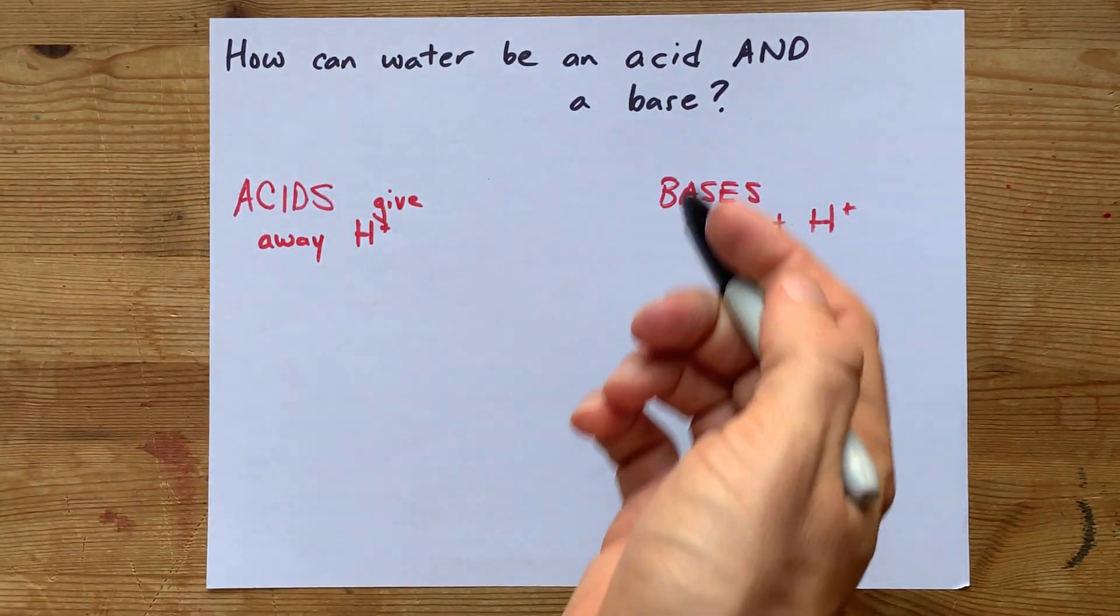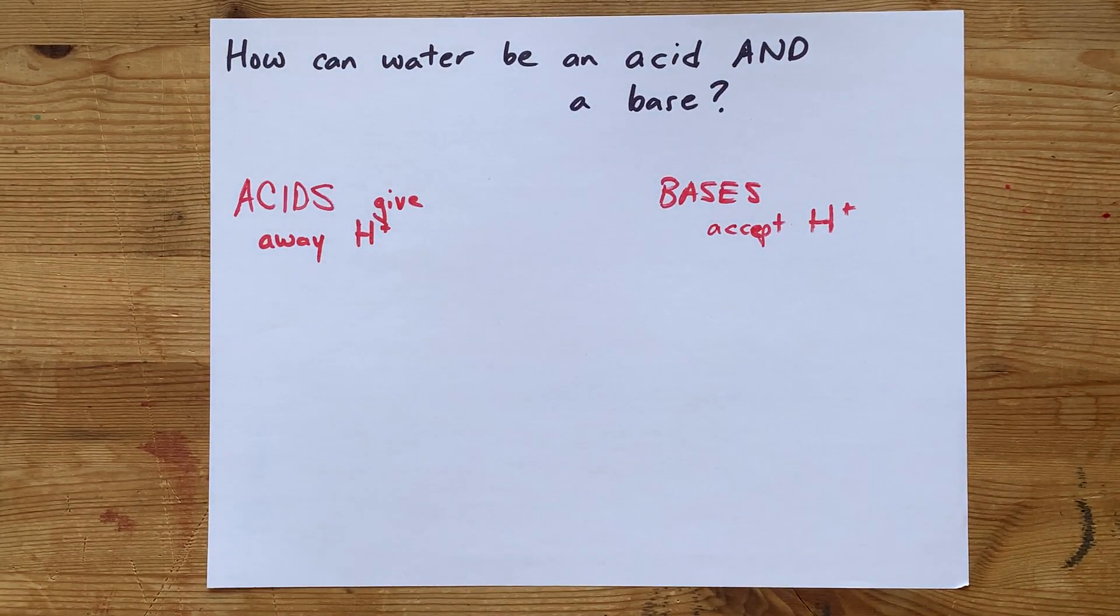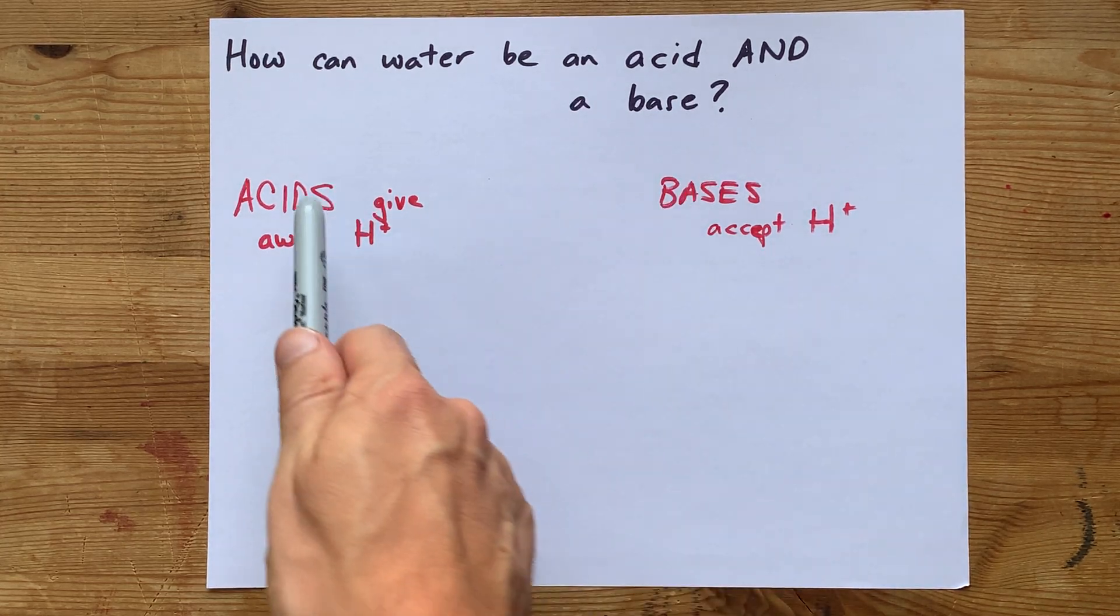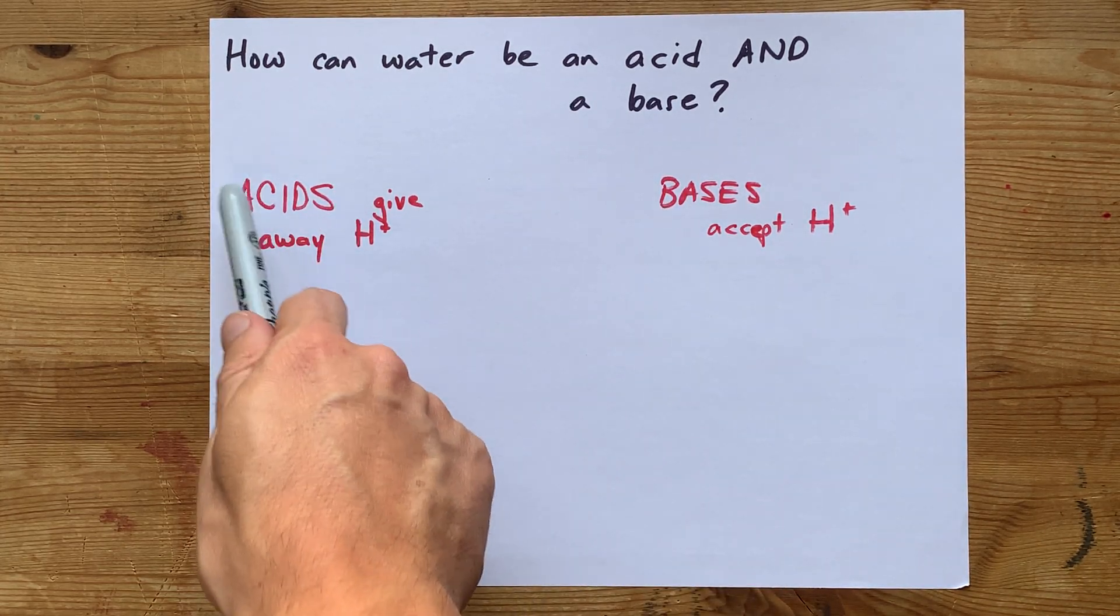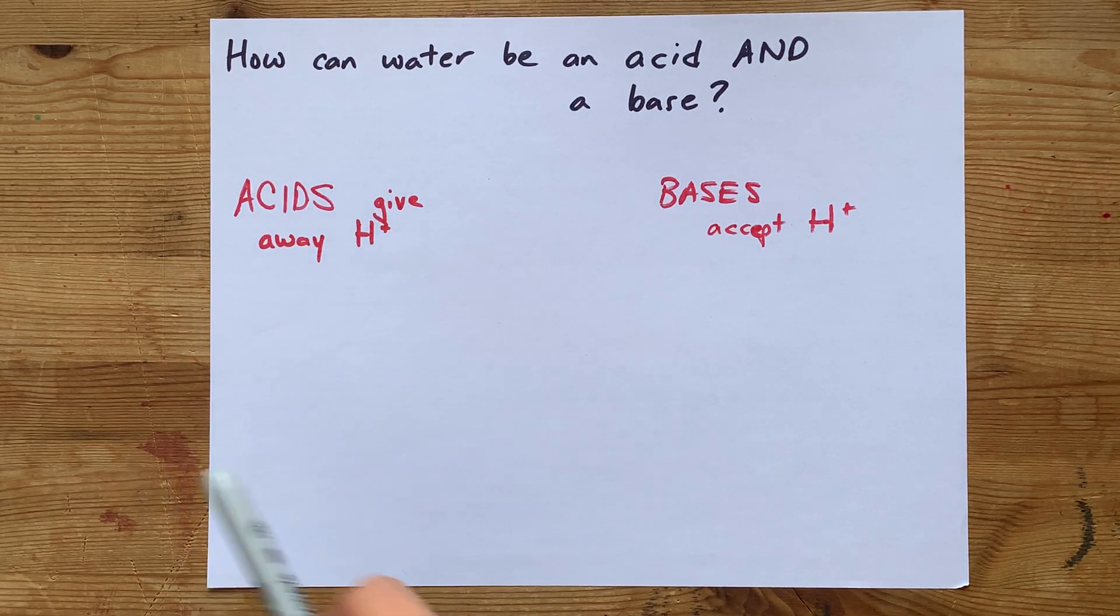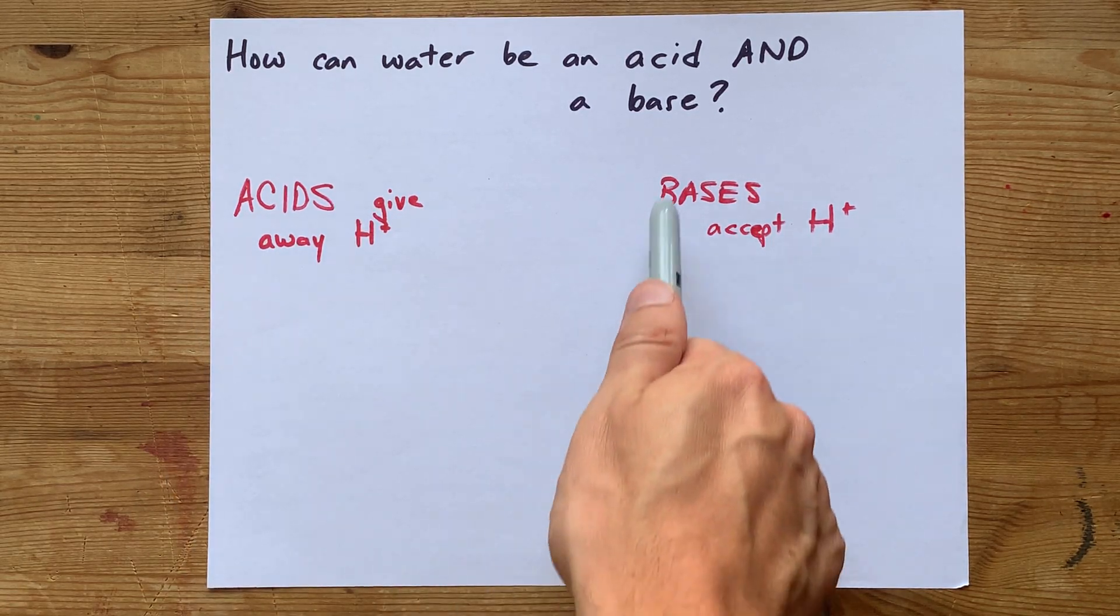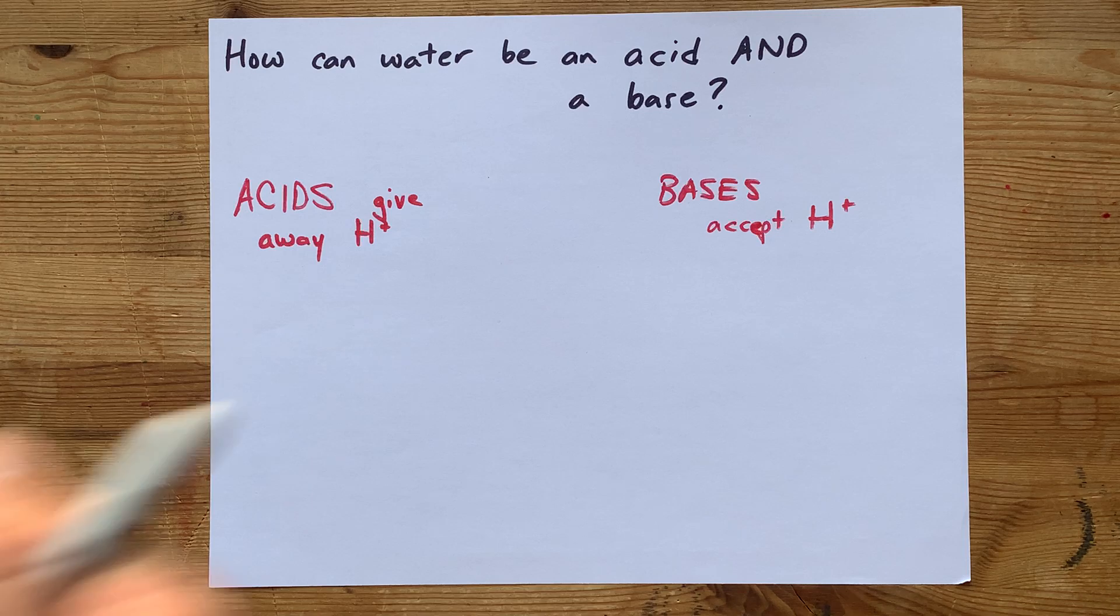How can water act as an acid and also as a base? Well, the definition of a Brønsted-Lowry acid is anything that gives away H+, and a base is anything that can accept an H+ ion.